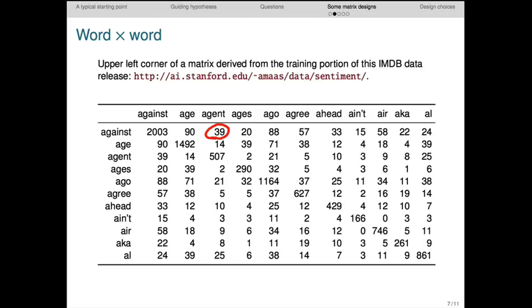In any event, I've found that, impressionistically, word by word matrices yield better representations than word by document ones, but I imagine others would offer more or less opposite advice.